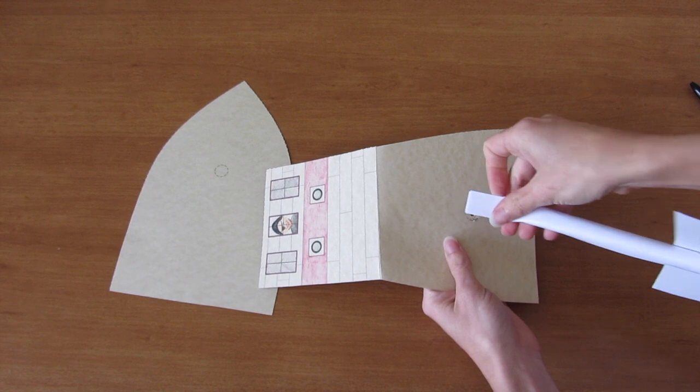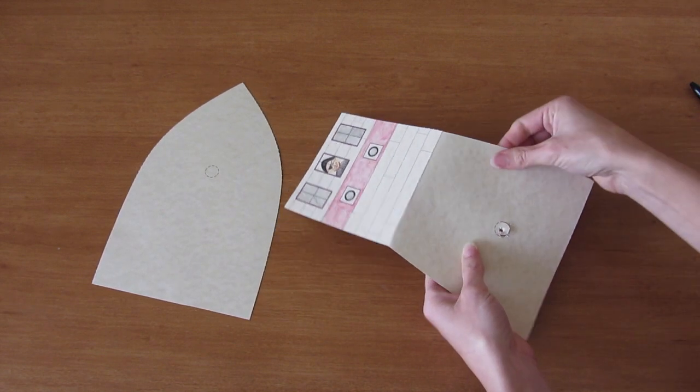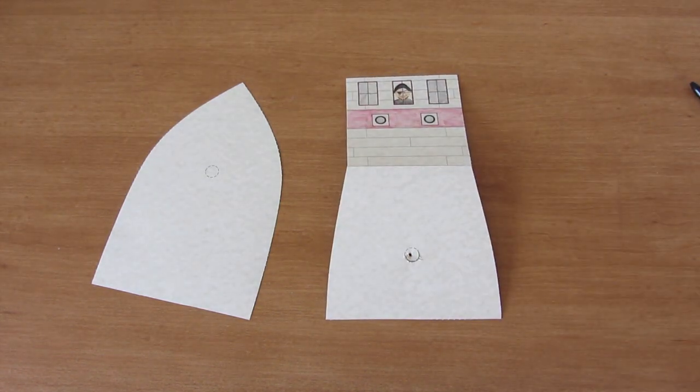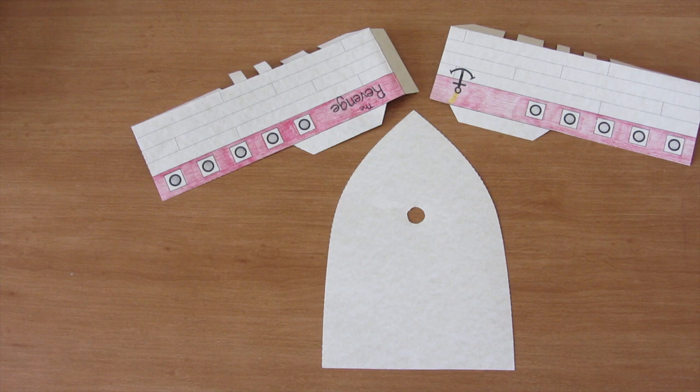So depending on how thick your mast is, your hole might need to be a little bit smaller or a little bigger than the hole that I'm making there. And then go ahead and take some scissors and cut around the edge of the hole. What you're actually trying to do is make this a size where your mast will fit through the hole.